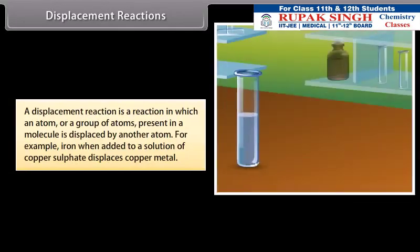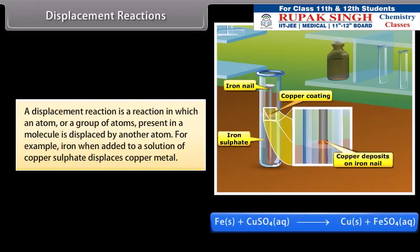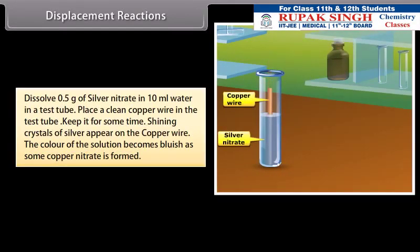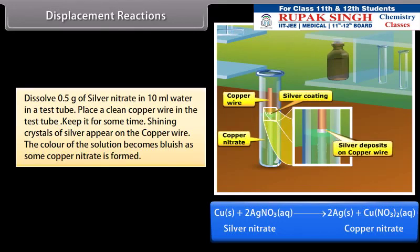Displacement reactions: A displacement reaction is a reaction in which an atom or a group of atoms present in a molecule is displaced by another atom. For example, iron, when added to a solution of copper sulfate, displaces copper metal. Activity: Dissolve 0.5 gram of silver nitrate in 10 ml water in a test tube. Place a clean copper wire in the test tube. Keep it for some time. Shining crystals of silver appear on the copper wire. The color of the solution becomes bluish as some copper nitrate is formed.